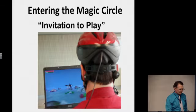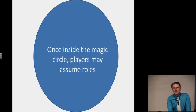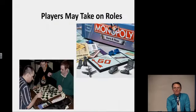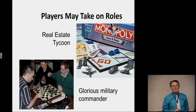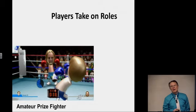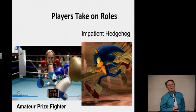Once inside the magic circle, players may assume roles — they may not be themselves anymore. When you're playing Monopoly, you assume the role of a real estate tycoon. In chess, you become a glorious military commander. In Wii Boxing, you become an amateur prize fighter. In Sonic the Hedgehog, you become an impatient but very fast hedgehog.